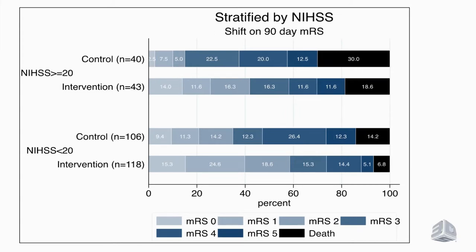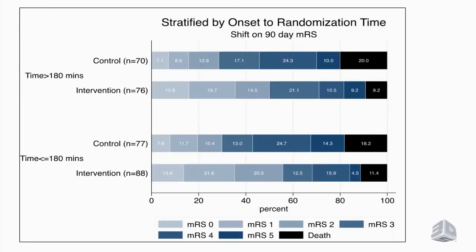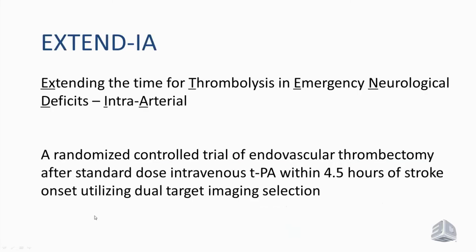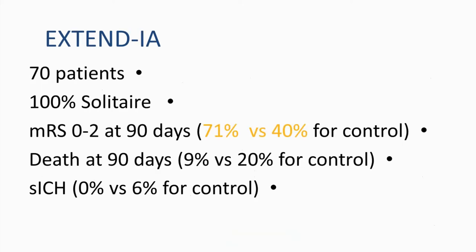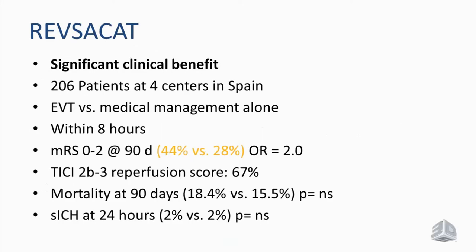The benefit was also consistent when patients were stratified by their NIHSS — the severity of their stroke — and when stratified by time from onset to randomization. Patients in the control arm had a much worse outcome than those in the interventional group, regardless of time from onset to randomization. With the EXTEND-IA study, again we had overwhelming evidence. In the REVA-SCAT study, patients had 44% versus 28% modified Rankin Scale — again, overwhelming evidence.